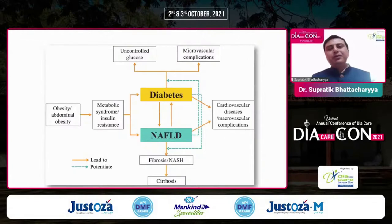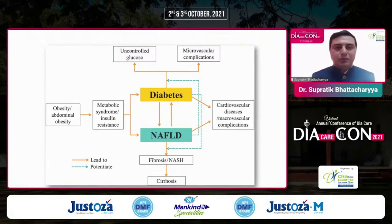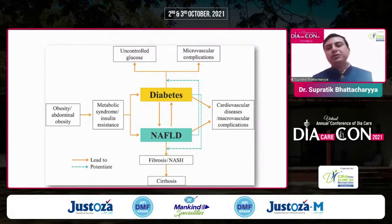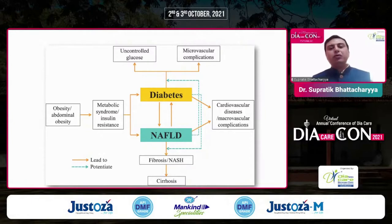We know that it's an entire spectrum starting from central obesity, metabolic syndrome, and dysglycemia — they're all related. There's a lot of crosstalk even between the liver and the heart, which my colleague is going to talk about. But central to all of that is probably insulin resistance.